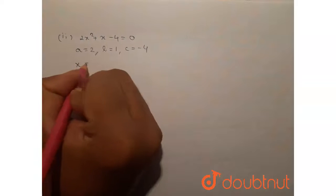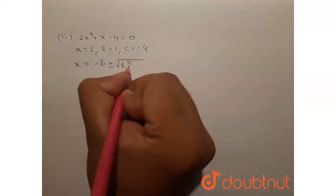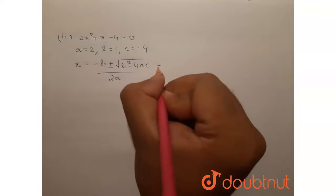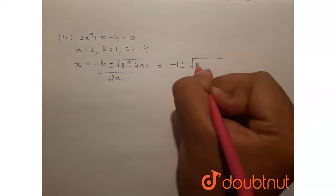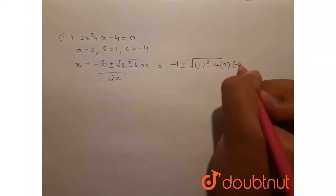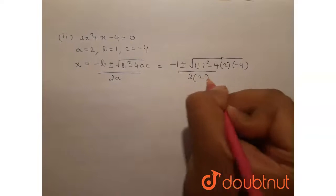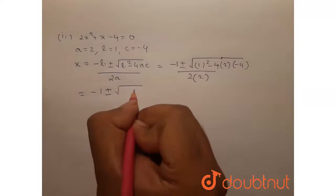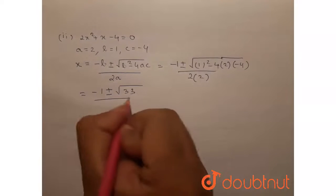So the roots of the equation as per the quadratic formula are given by minus b plus or minus root of b squared minus 4ac by 2a. This equals minus 1 plus or minus root of 1 squared minus 4 into 2 into minus 4, all by 2 into 2, which becomes minus 1 plus or minus root 33, all over 4.